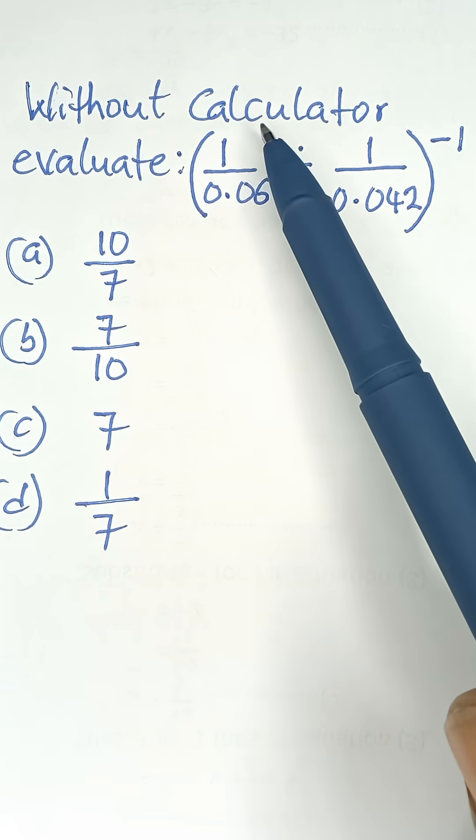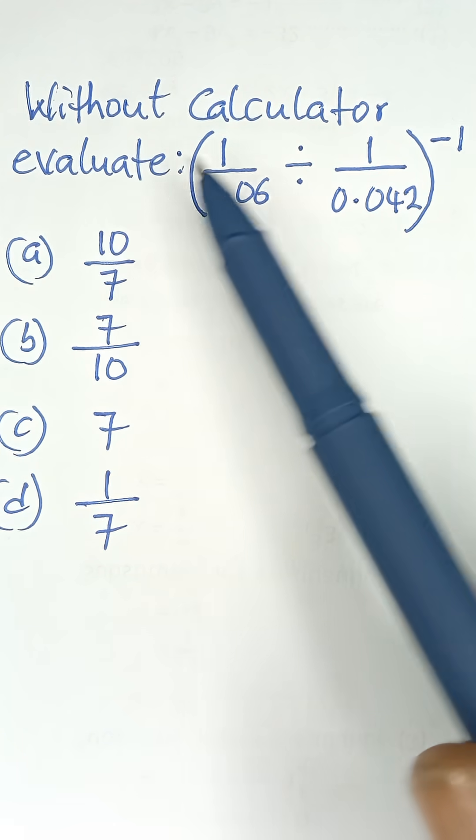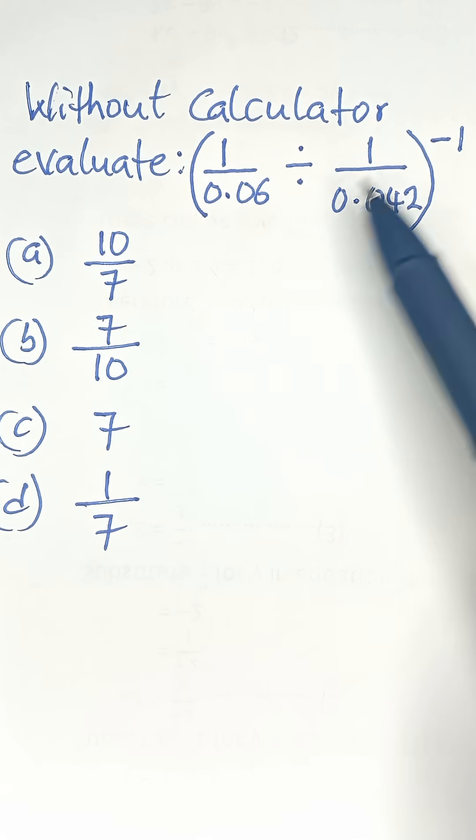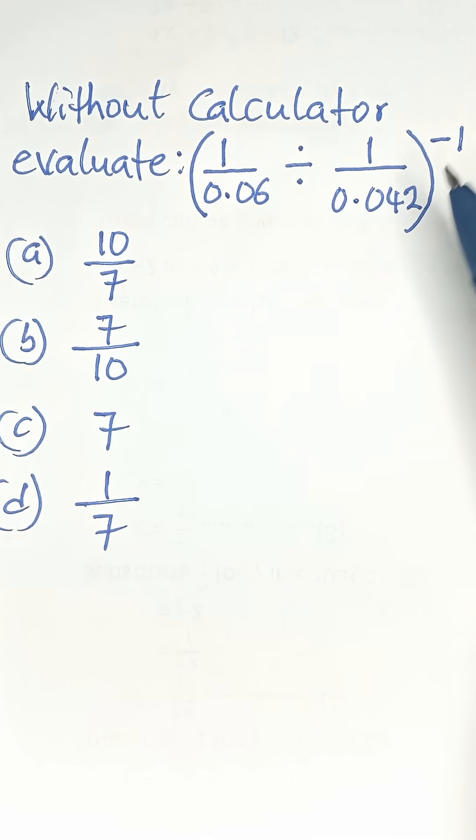So without calculator, evaluate 1 over 0.06 divided by 1 over 0.042, all raised to the power negative 1.